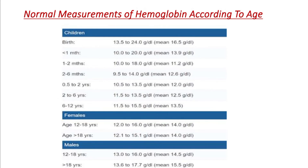For 2 to 6 years, the average normal hemoglobin is 12.5 gram per dL. For 6 to 12 years, the normal hemoglobin level range is 11.5 to 15.5 gram per dL, with an average of 13.5 gram per dL.